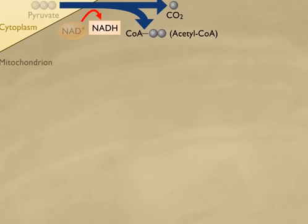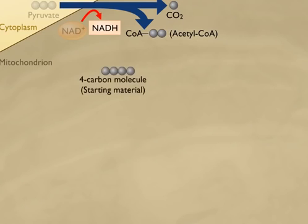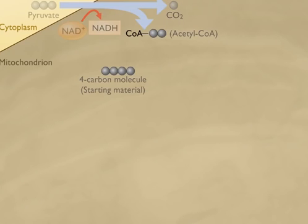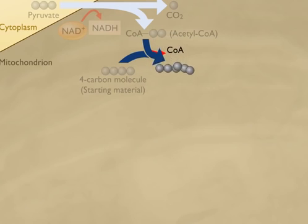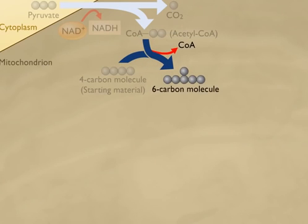During the conversion of pyruvate to acetyl CoA, carbon dioxide (CO2) is produced and a molecule of NADH is formed. The two-carbon acetyl portion of the acetyl CoA is transferred to a four-carbon molecule, producing a six-carbon compound. The CoA carrier molecule is released.